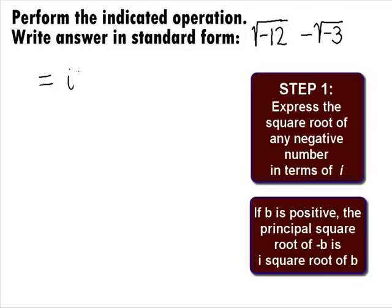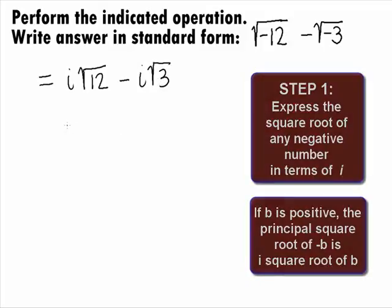So, we can rewrite the square root of negative 12 as i square root of 12 minus and rewrite the square root of negative 3 as i square root of 3.